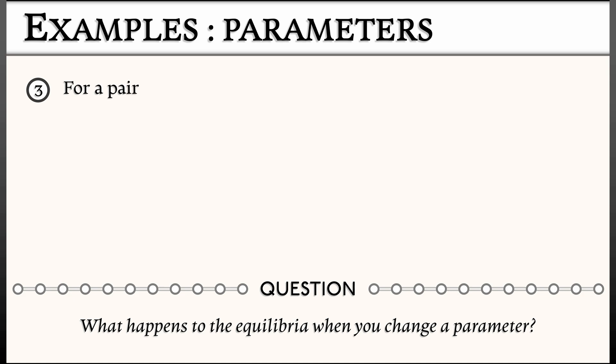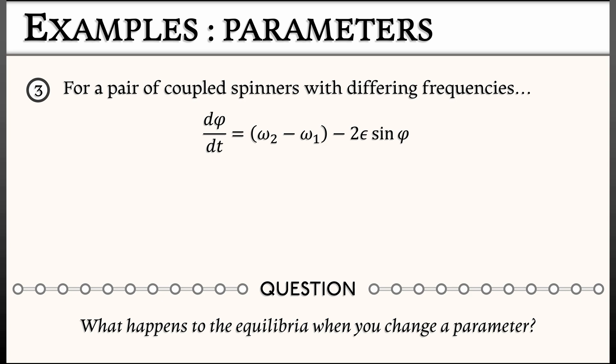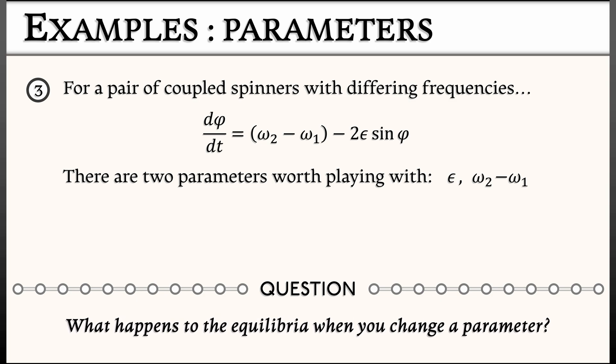A more recent example comes from looking at a pair of coupled spinners with different frequencies, where you look at the dynamics of the phase angle φ. The system we had was dφ/dt = (ω₂ - ω₁) - 2ε sin φ. Epsilon is the coupling strength. Sine φ is the coupling function, assuming sinusoidal coupling. There are two parameters worth playing with here: ε, the coupling strength, and the frequency difference, ω₂ - ω₁. In this system, weird things can happen with the equilibria. That's something we'll dig into a little bit later.